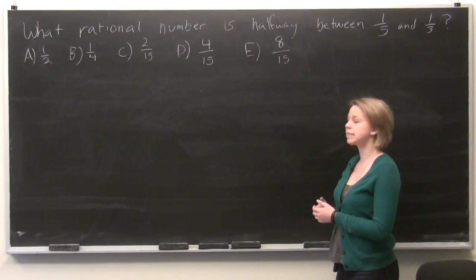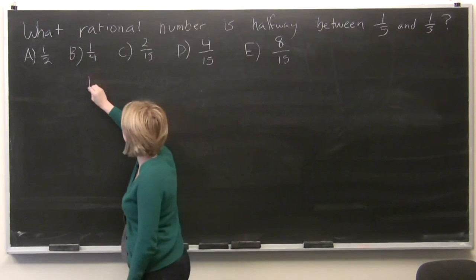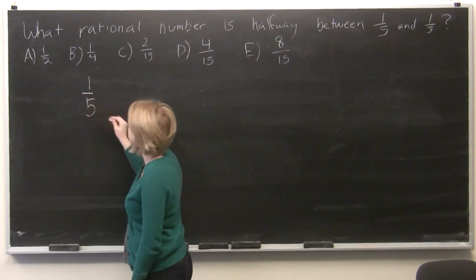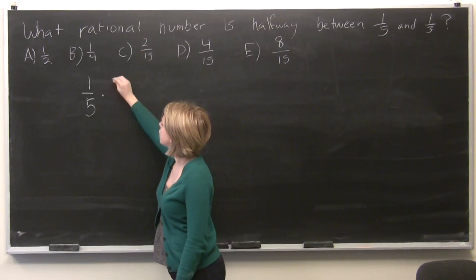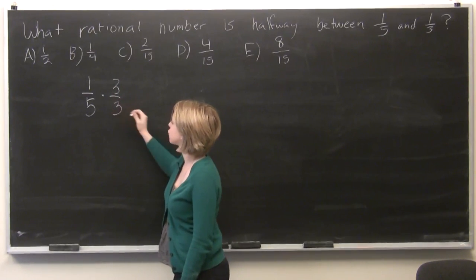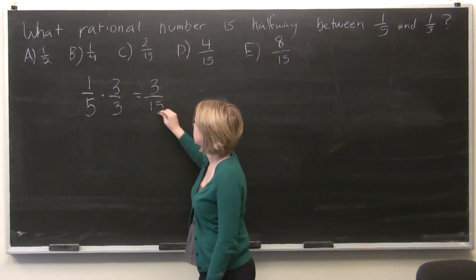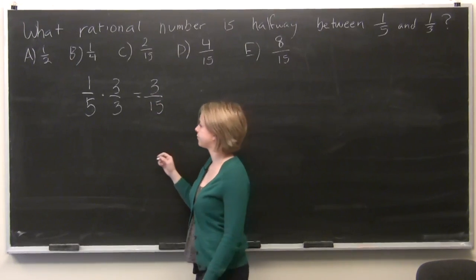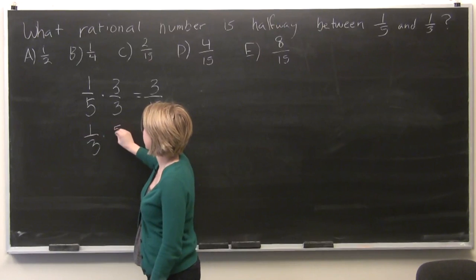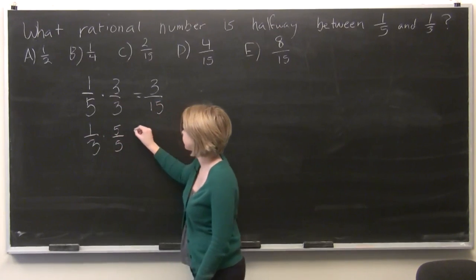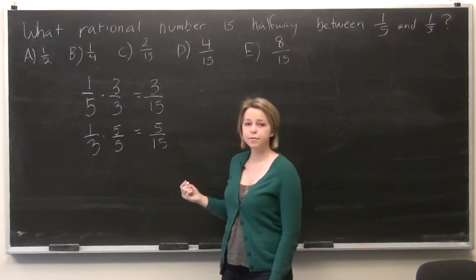So in order to solve this, let's set the denominators equal to each other. So in order to make them equal, we'll multiply 1/5 by 3 over 3 and we'll get 3 over 15. And we'll do the same for 1/3, multiplying it by 5 over 5 to get 5 over 15.